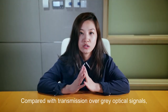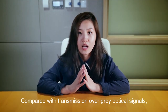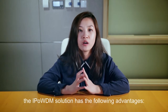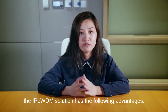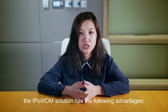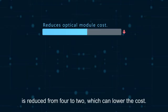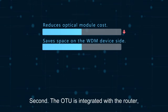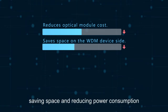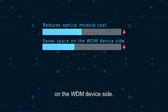Compared with the transmission over gray optical signals, the IP over WDM solution has the following advantages. First, the number of optical modules required is reduced from 4 to 2, which can lower the cost. Second, the OTU is integrated with the router, saving space and reducing power consumption on the WDM device side.